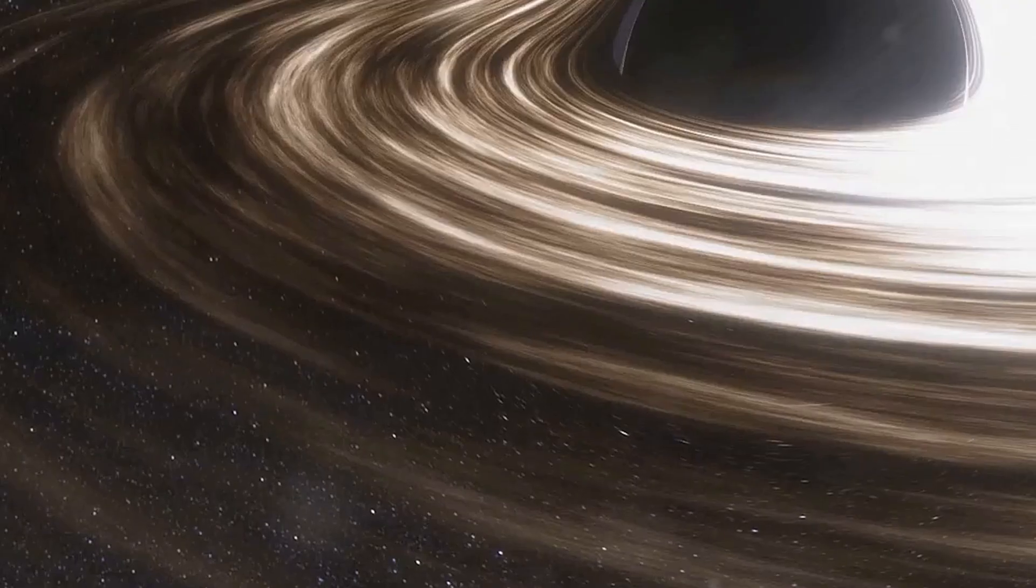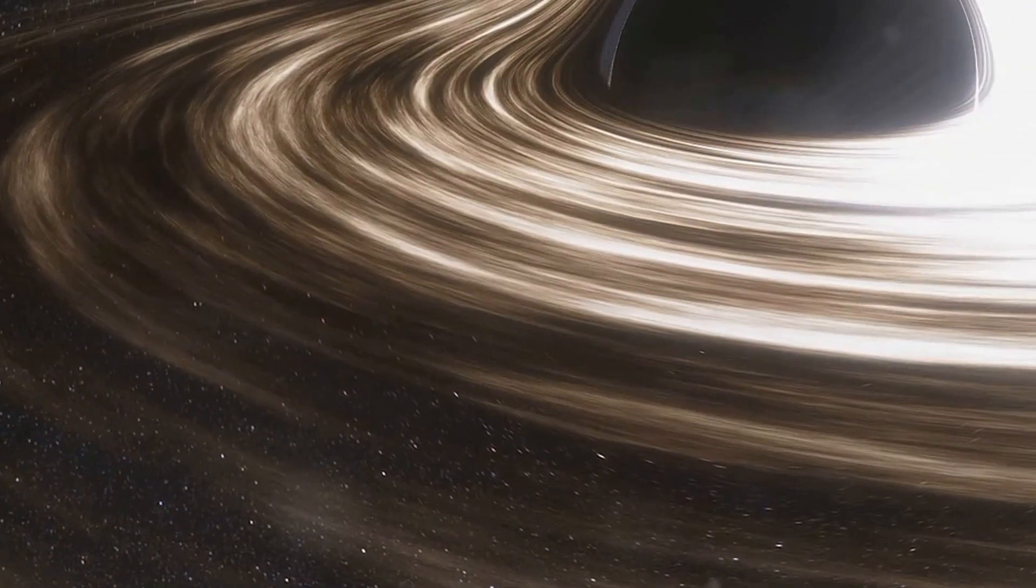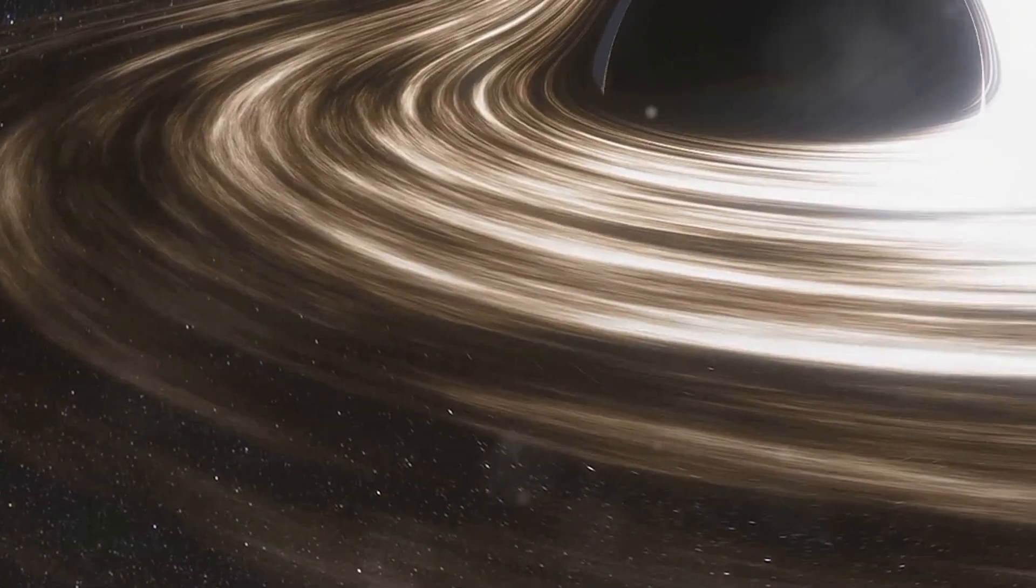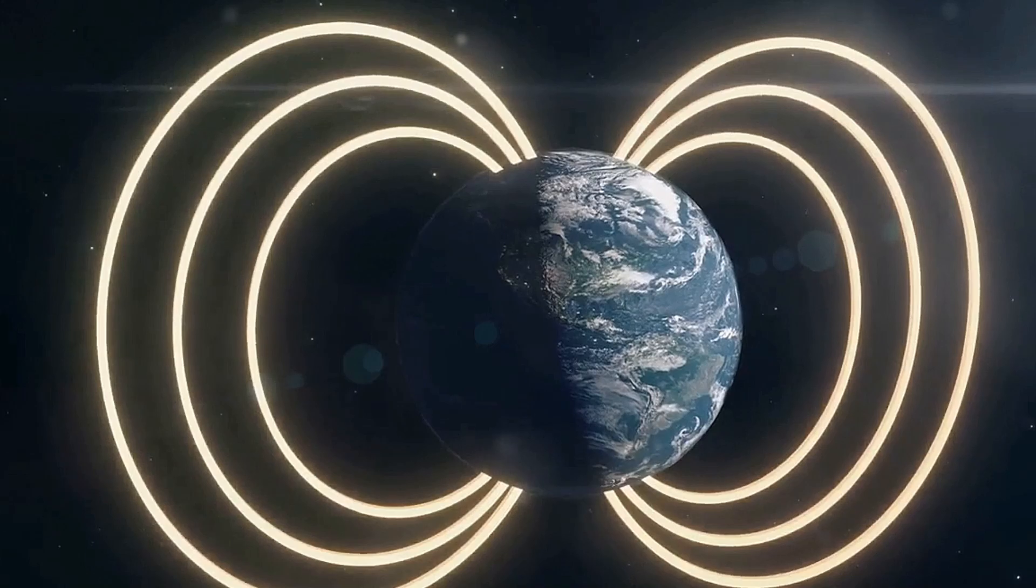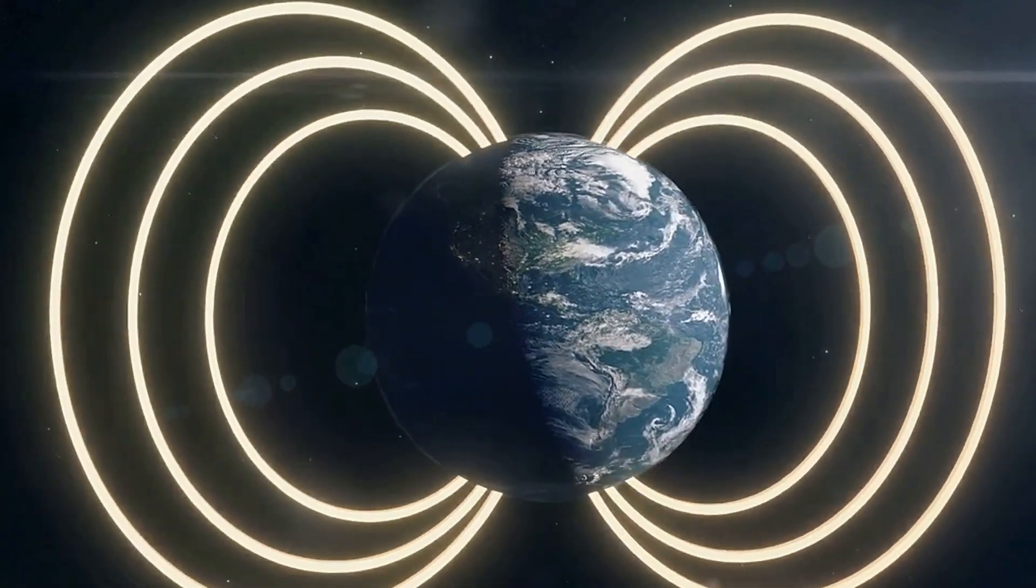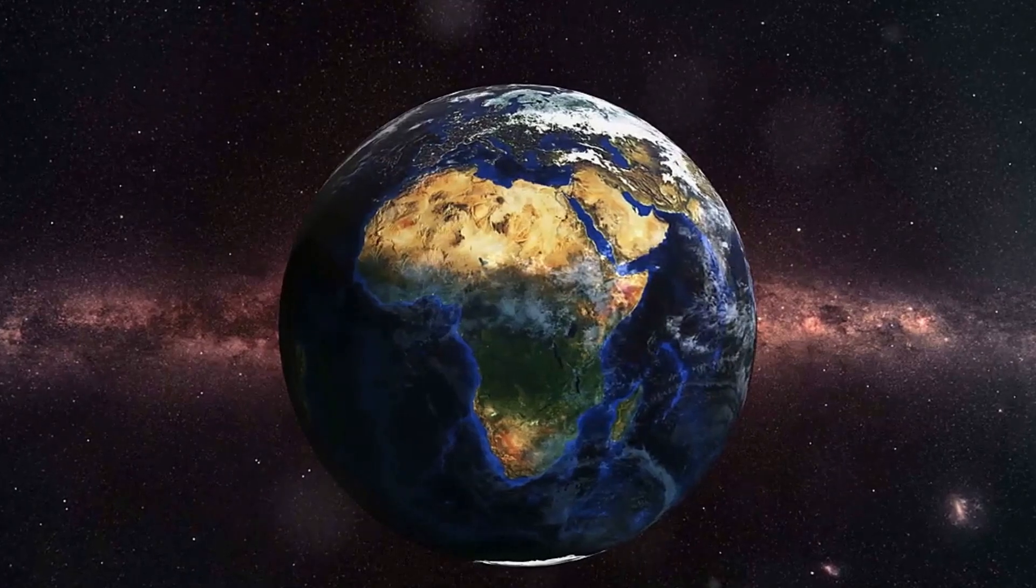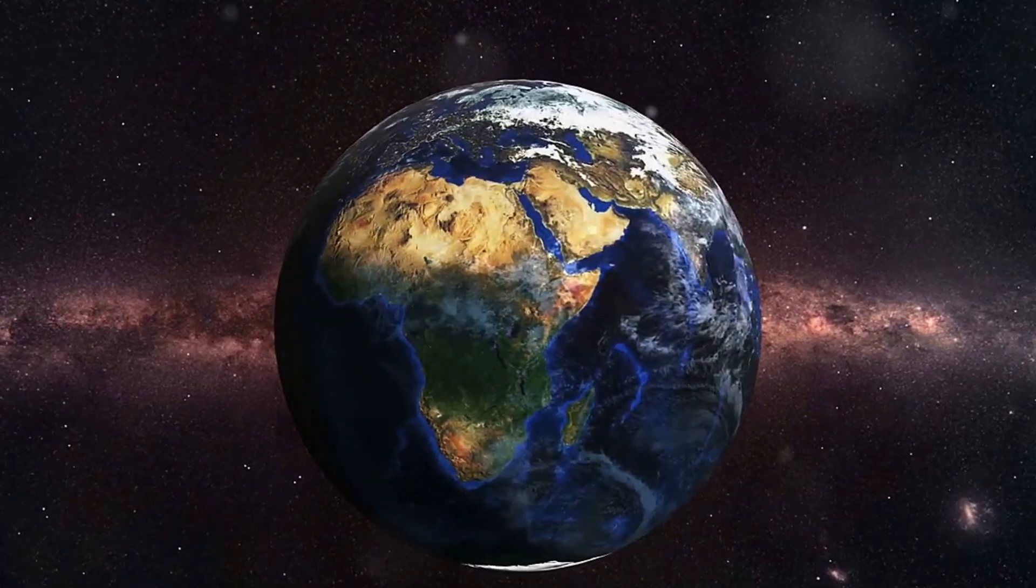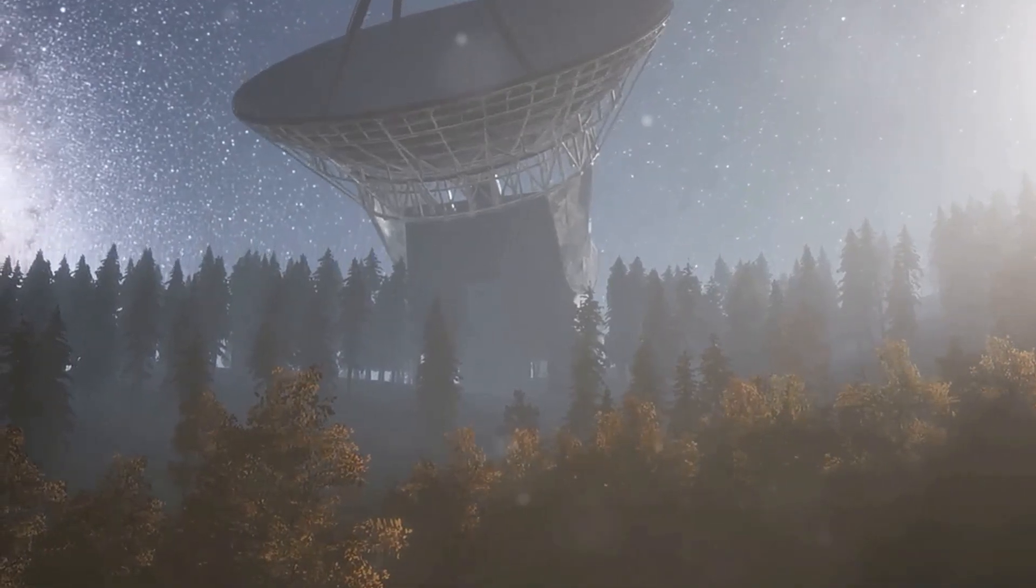Then there are the gravitational wave observatories, such as LIGO and Virgo. These facilities monitor the ripples in the fabric of spacetime itself, ripples caused by monumental events like the merging of neutron stars. When these gravitational waves pass through Earth, they slightly distort space, a distortion so minute that only the most delicate and finely tuned instruments can detect it.